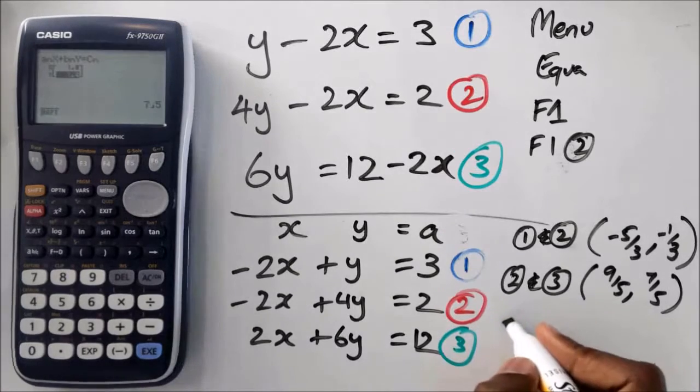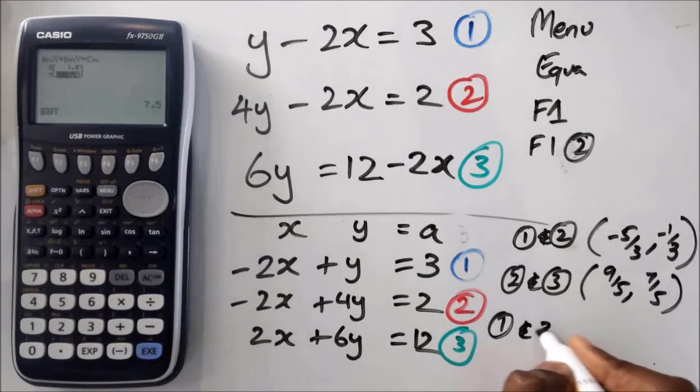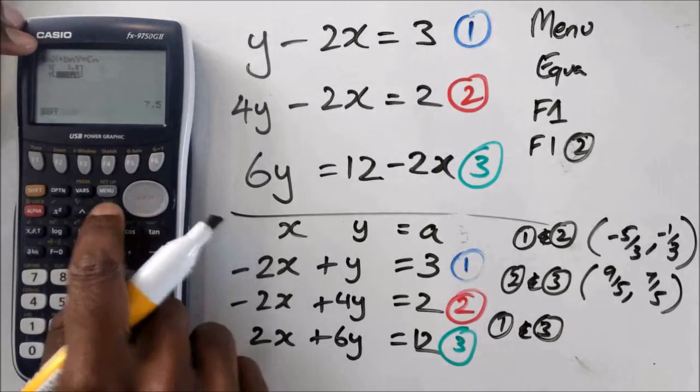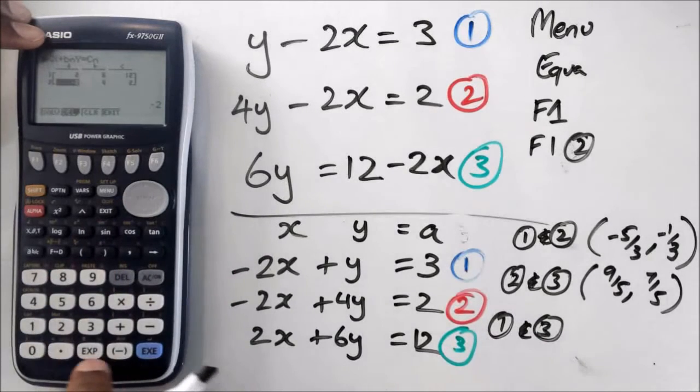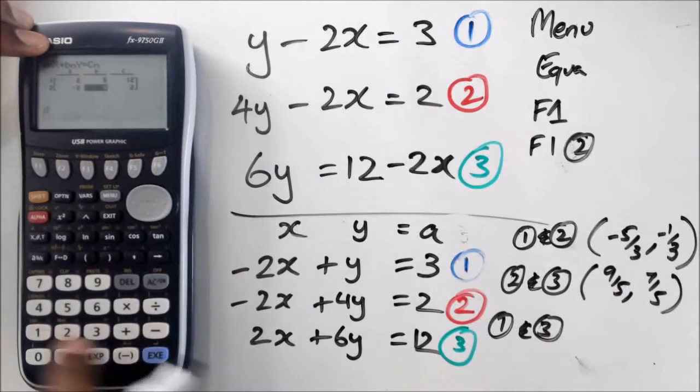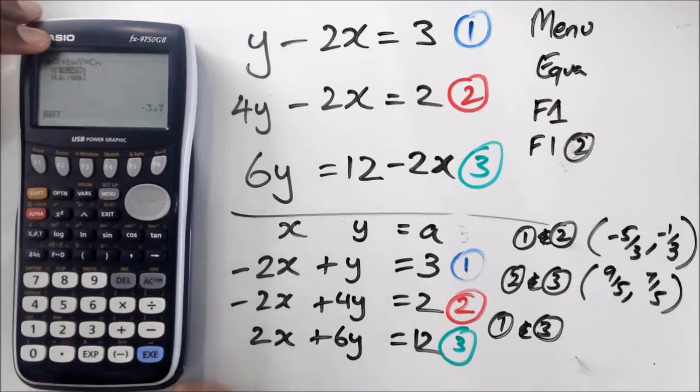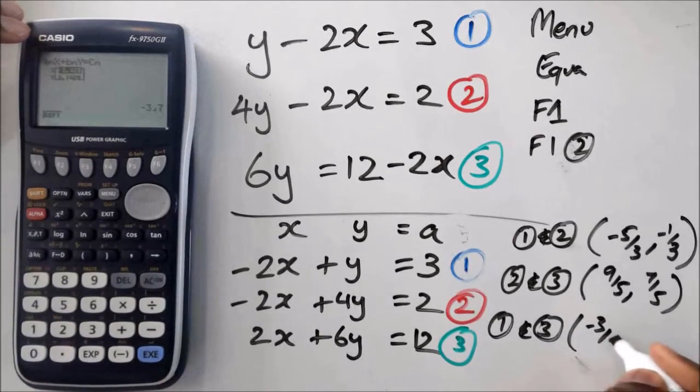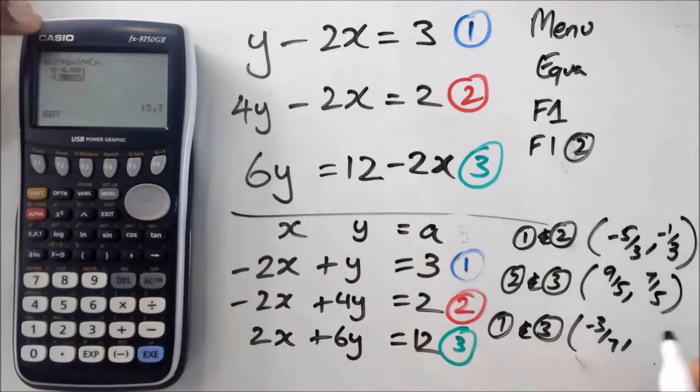And finally doing equation 1 and 3. So I just press exit. Equation 1 and 3 is going to be negative 2, 1, 3. So negative 3 over 7 and 15 over 7.